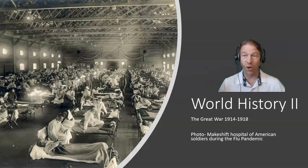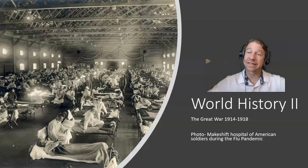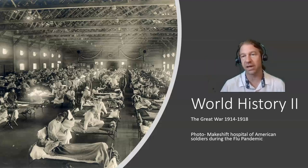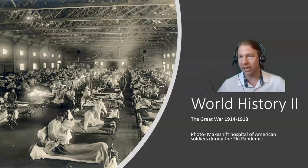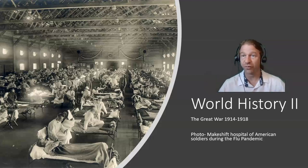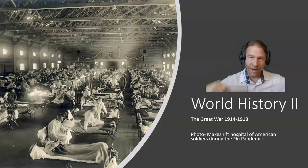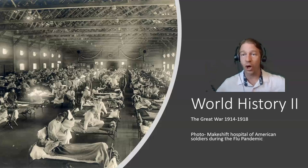The First World War largely began in the Austro-Hungarian Empire, which was a large central and southeastern European empire that had really been the dominant political force in Europe during the 1800s. By the beginning of the 1900s, there had been nationalist movements within that empire pressing for their independence, many of them.